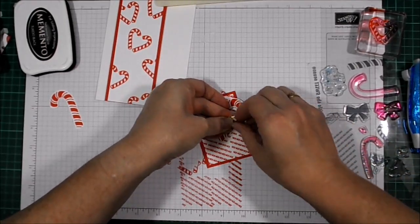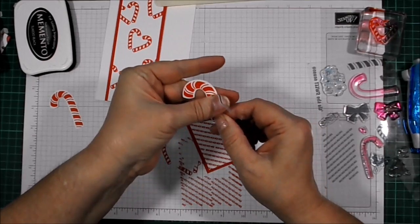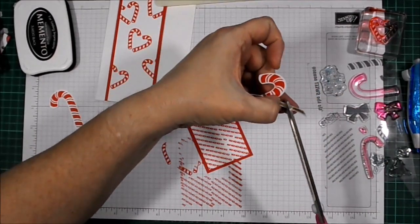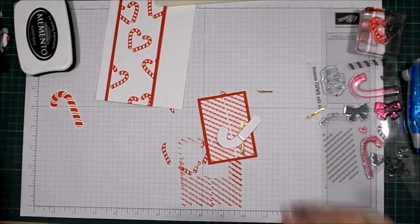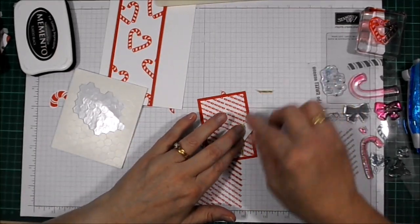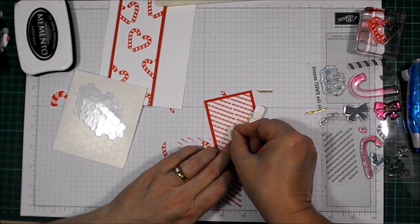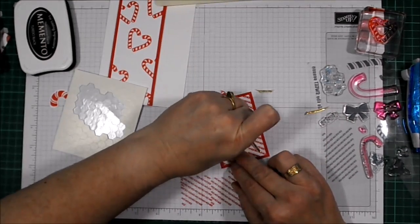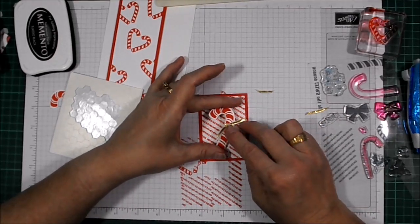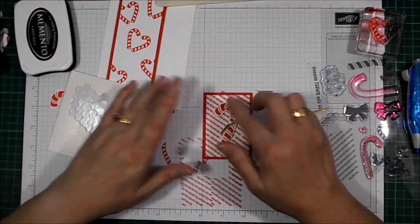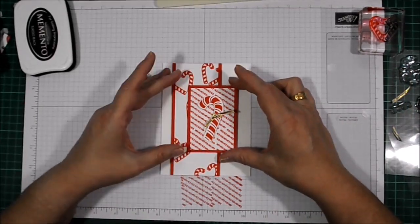And we will put... There we go. So just move that up a bit, give it a trim. Like so. And we'll pop that on there with dimensionals to give it a bit of oomph. One there, one there, and one there.